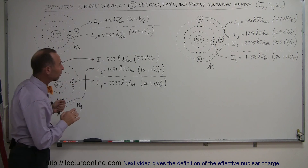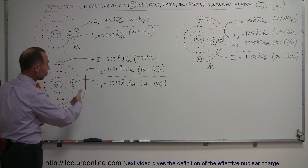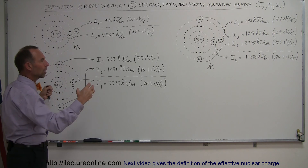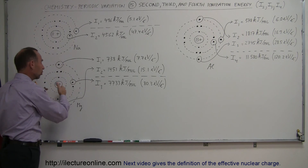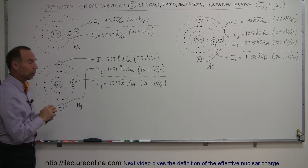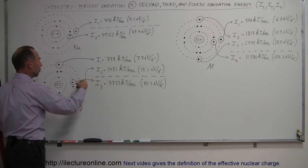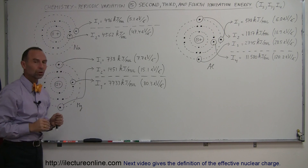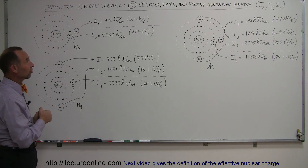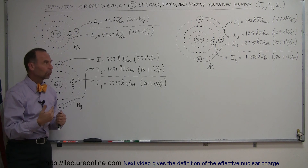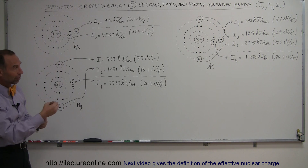Hopefully this illustrates how ionization energy is determined — not just for the first electron you remove, but the second, third, fourth, fifth, and so forth. Any time you pull out more and more electrons, the ionization energy keeps going up because those remaining electrons are closer to the nucleus. There's a much stronger pull toward the center as the number of protons becomes far greater than the number of electrons, and therefore it takes a lot more energy to take those electrons away.